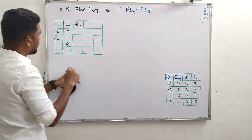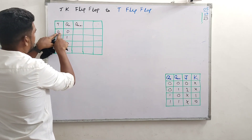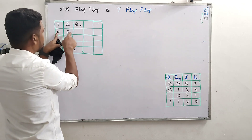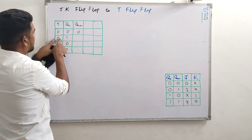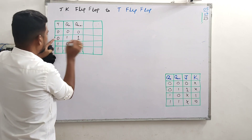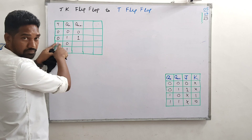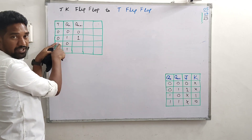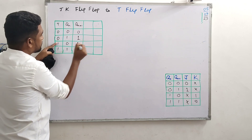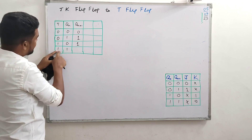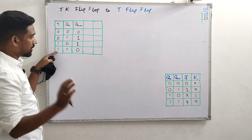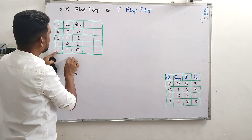For the T flip-flop truth table: T=0, clock pulse comes — no change, so 0→0 continues. Again T=0, clock pulse comes — no change, state remains 1→1 continues. T=1, clock pulse comes — next state is 1 (toggling from 0). And T=1 again — next state is 0 (toggling from 1). We are done with the truth table of the required T flip-flop.